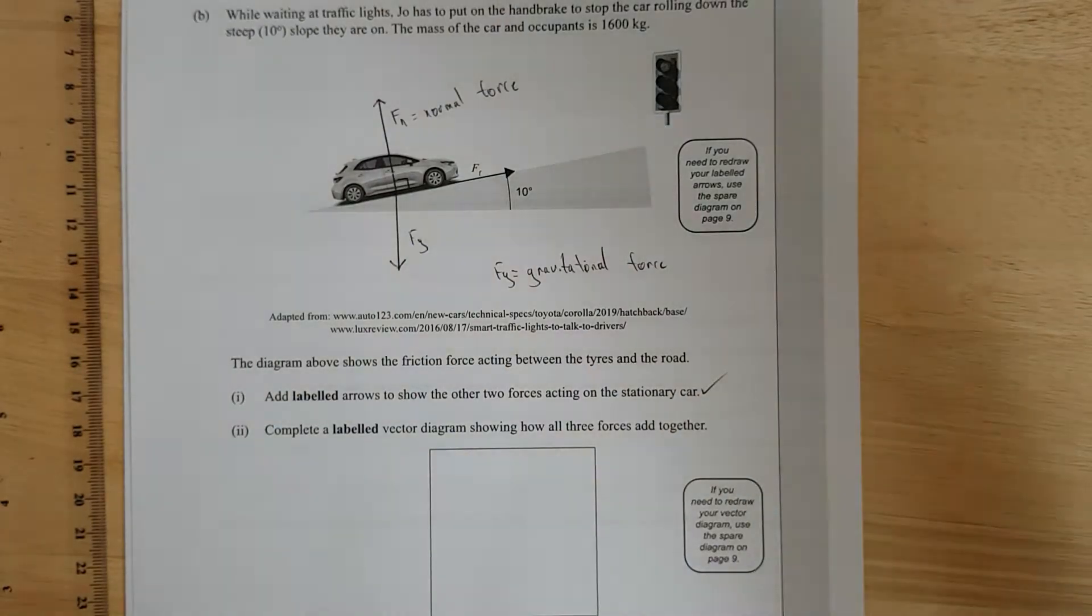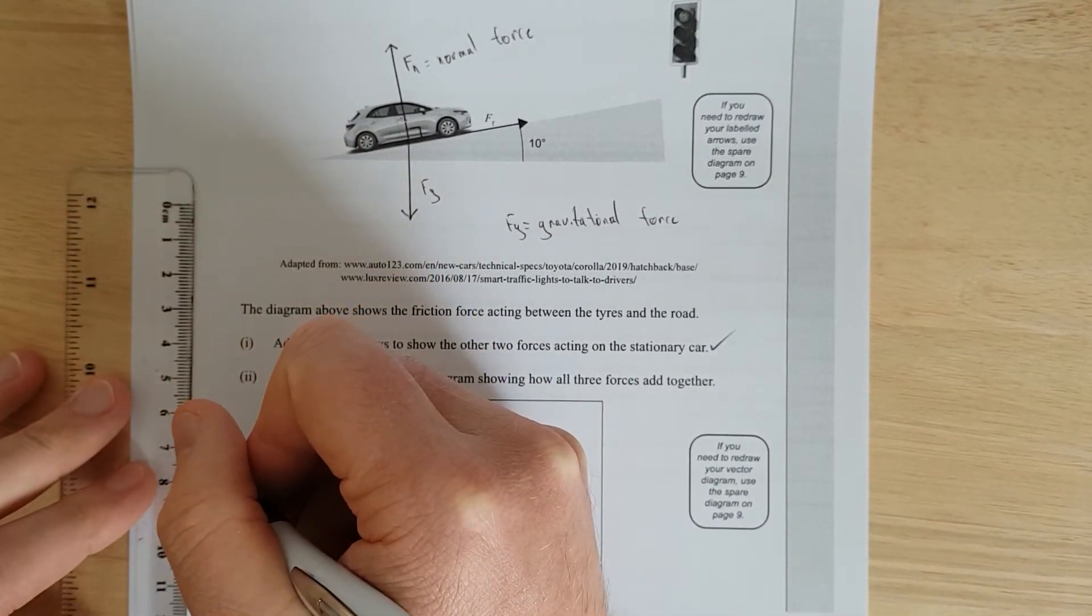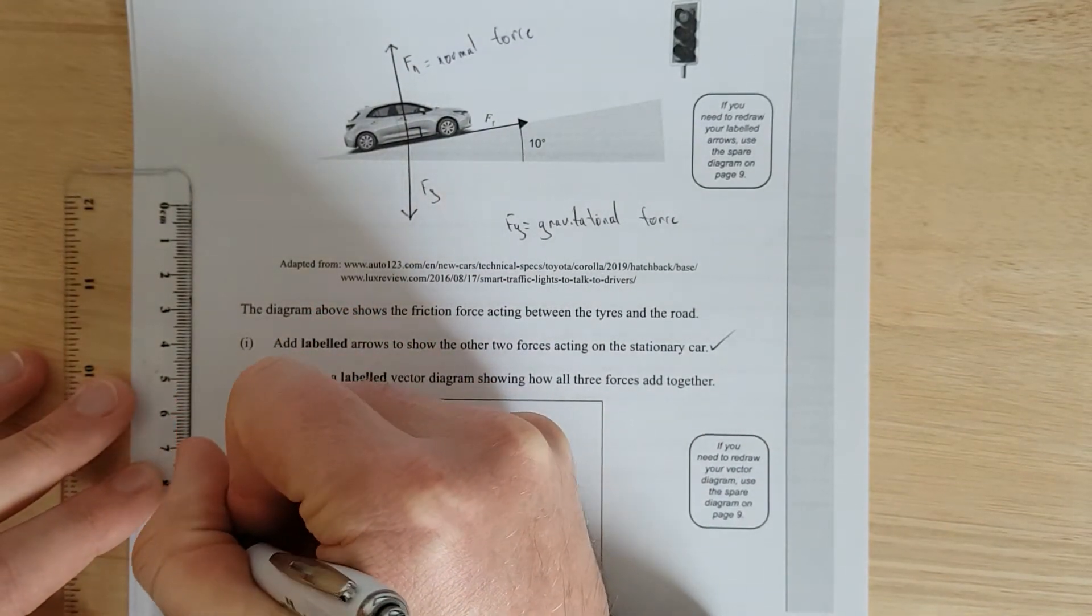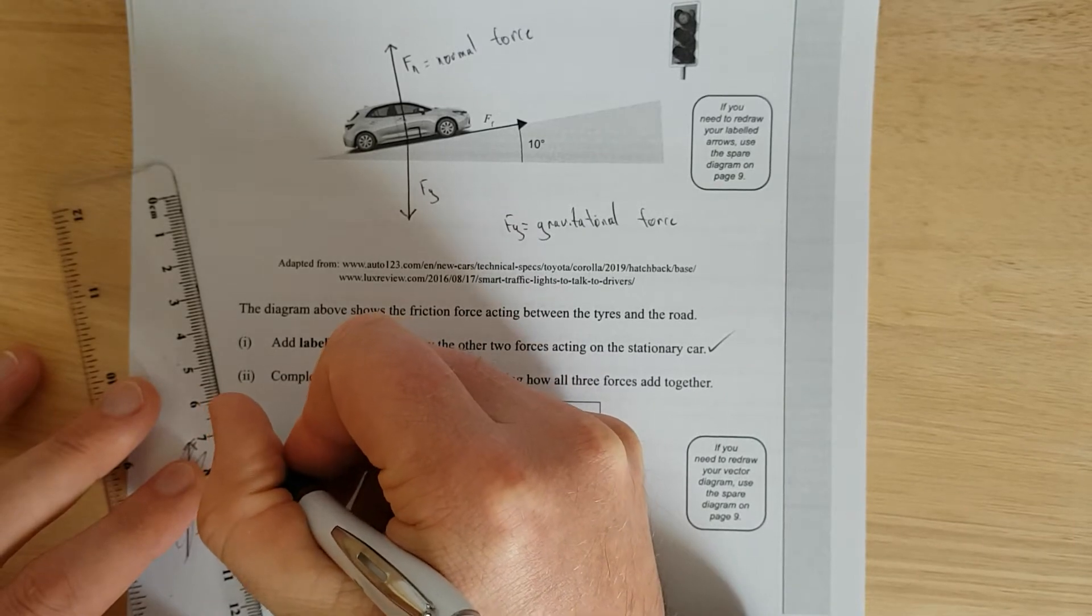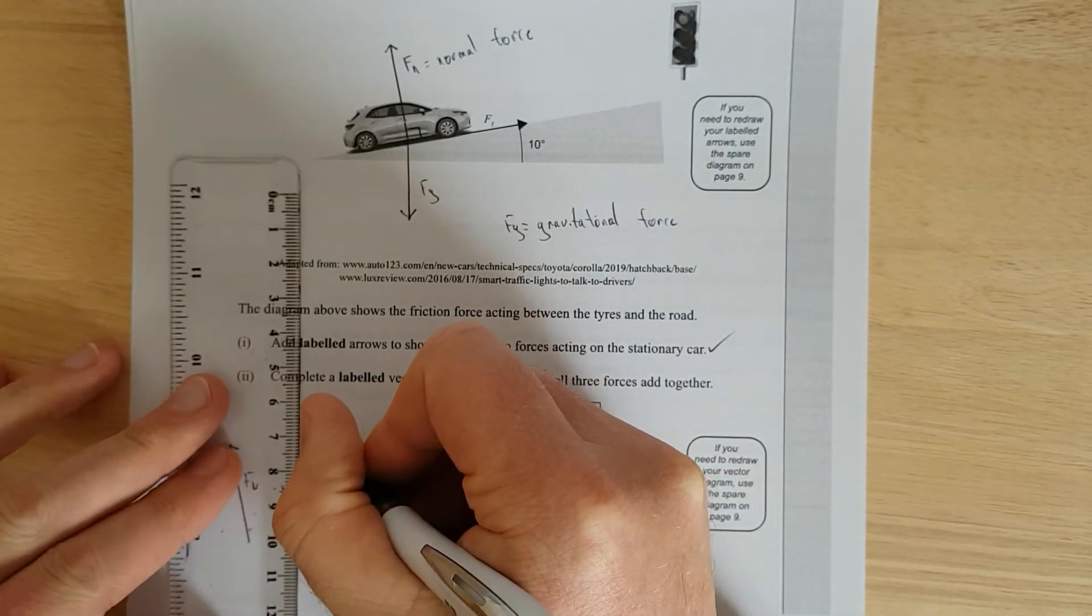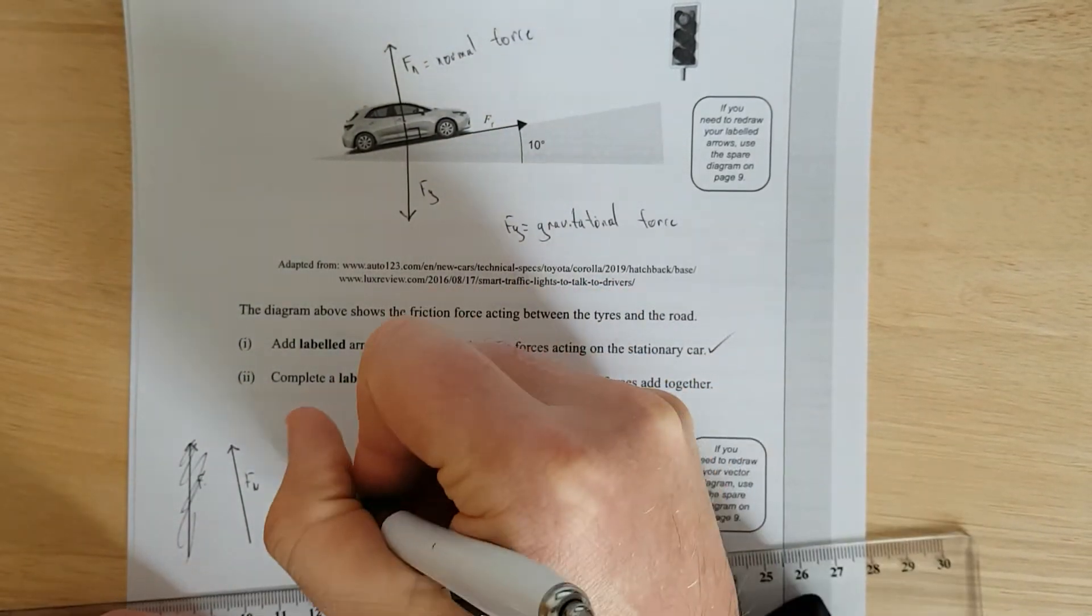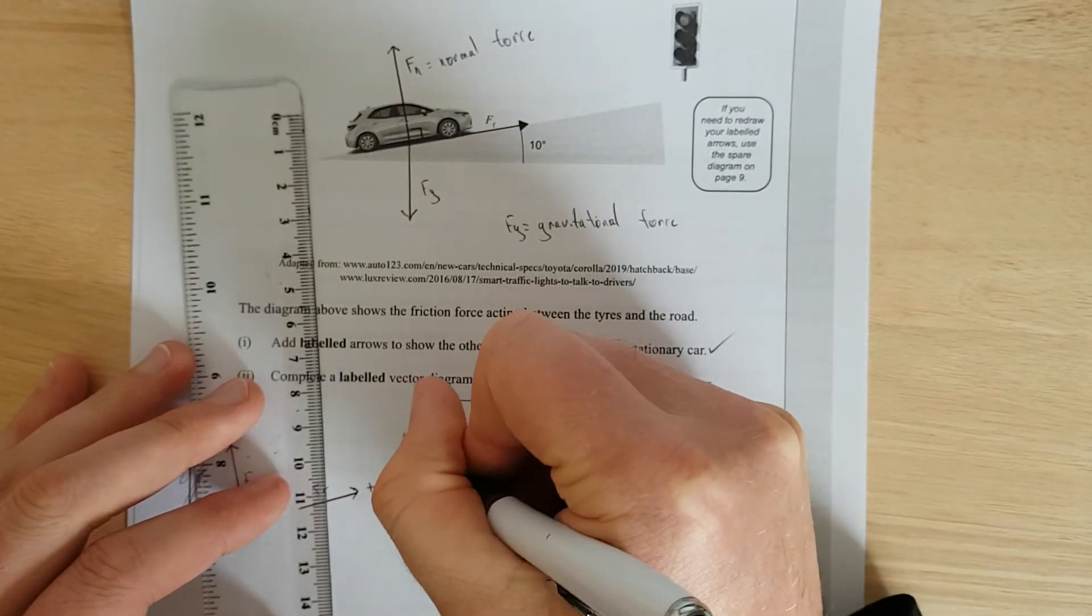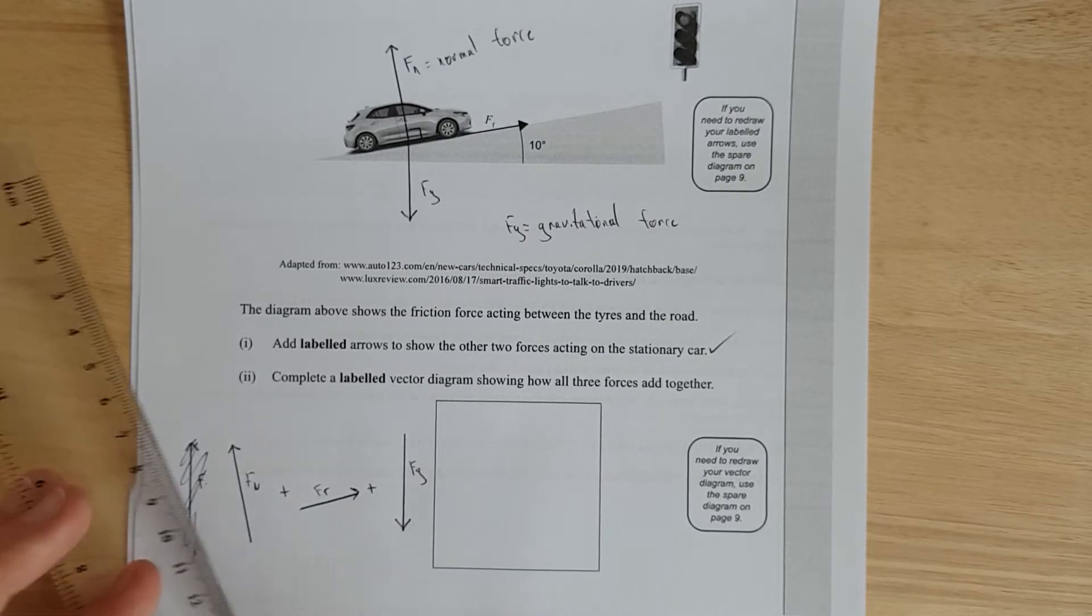Complete a labeled vector diagram showing how all three forces act together. So we should do it sequentially. The order doesn't matter. We're going to have the normal force pointing up. We'll do the friction force first. And then we're going to have FG going downwards. This is probably going to look like a wonky triangle. I'll do it in the order that I've sequentially done it. I'm going to go up the normal force and have FN.